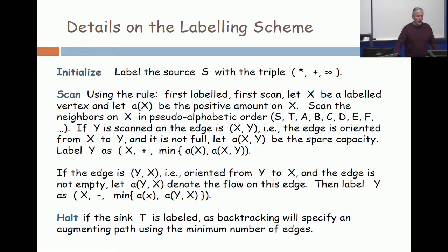Here's the way that you complete the scan. Scan the neighbors in pseudo-alphabetic order, but only looking at unlabeled ones in your list. If you find a neighbor, and it's directed from X to Y, and that edge is not full, then you're going to label Y with a triple.